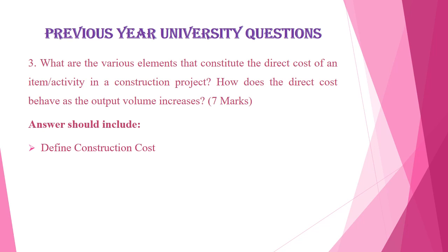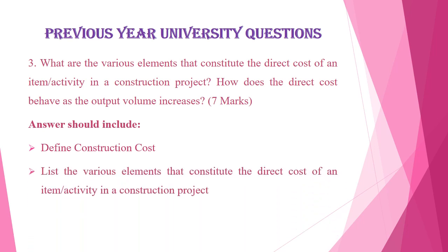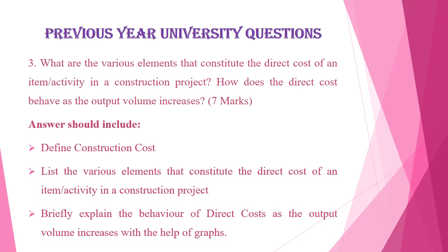Your answer should include: what is construction cost, then list out the various elements that constitute the direct cost of an item or activity in a construction project, and briefly explain the behavior of direct costs as the output volume increases, with the help of graphs.